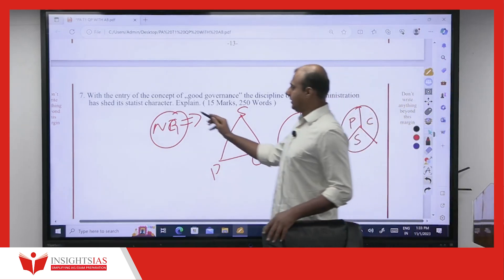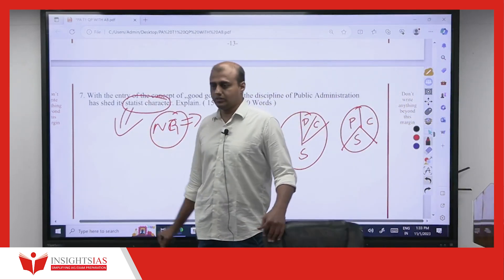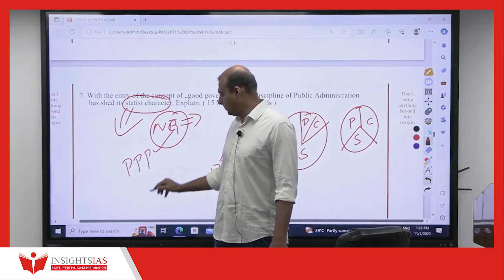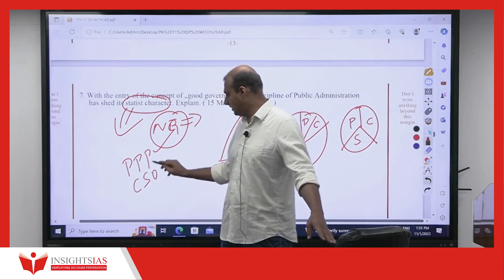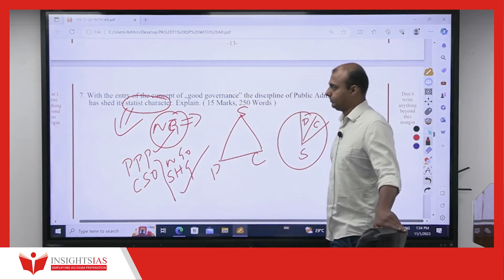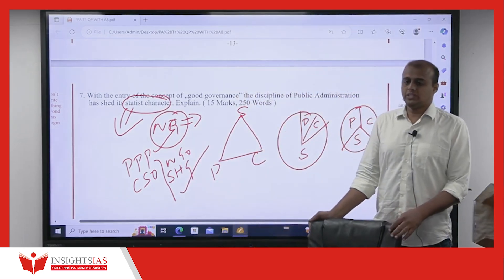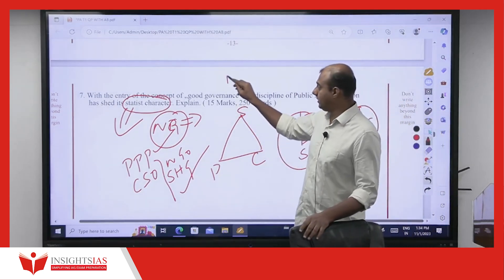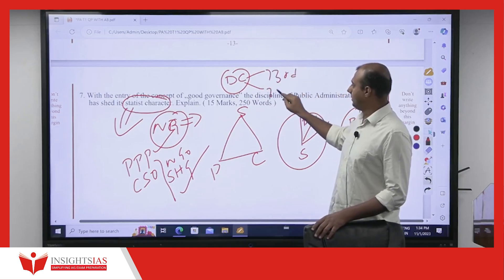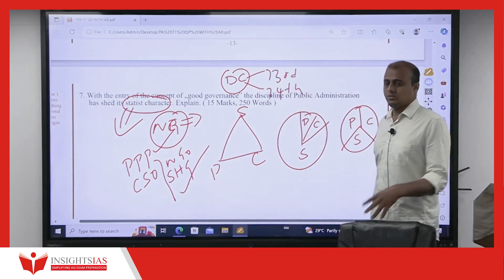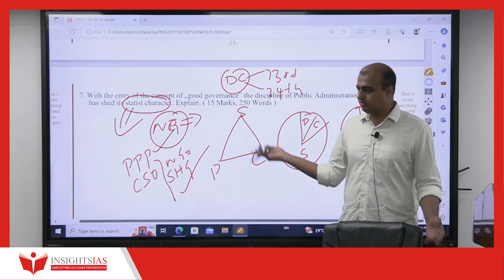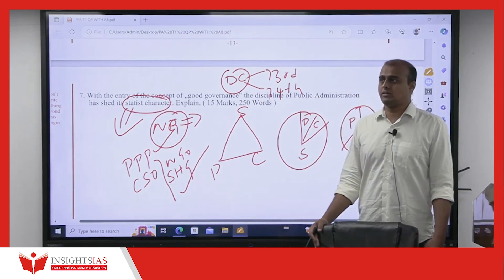So, obviously, what has changed? Statist character is no longer relevant. You have to work with whom? With other actors. When you write that, you explain few points about PPP, few points about civil society. There you can write something about NGO, something about SHG, all these aspects you write. The statist character is no longer true. And you can also encourage how decentralization has increased. If you want Indian example, you write which one? 73rd, 74th linked to that. So, explain that. If you keep on explaining one or two lines of each and everything, that is how the statist character is gone.